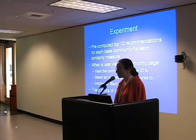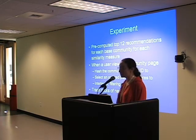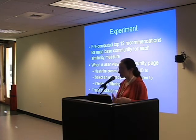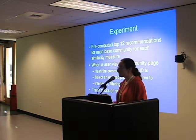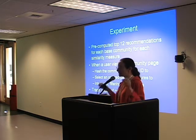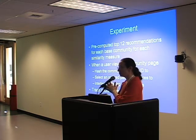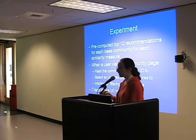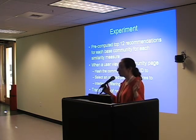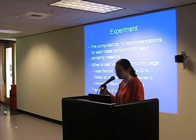For the experiment, we pre-computed the top 12 recommendations for each of the six similarity measures, then set up an experiment. When a user views a community page, we do a hash on the community ID and the user ID, and select a pair of measures — maybe L1 and Log Odds — to compare. We interleave those and track what the person clicks on. We only look at new users because we didn't want previous recommendations to influence results.